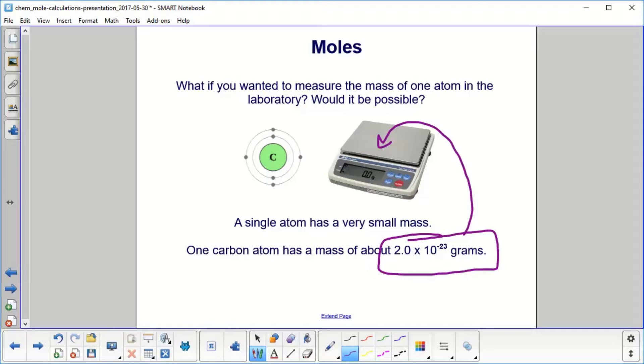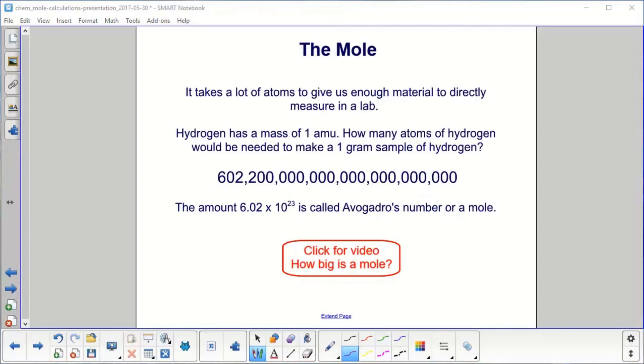Also, how would you trap the one atom and know that you had it? So basically, we measure the mass through indirect methods, kind of like the Millikan oil drop experiment or through mass spectrometry, but you can't measure it directly. It would take a whole lot of atoms to give us enough material to directly measure in a lab.